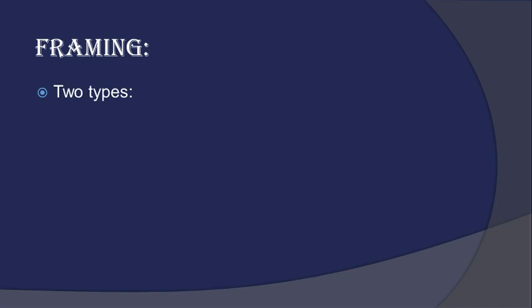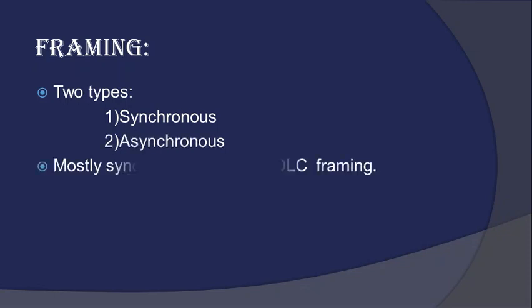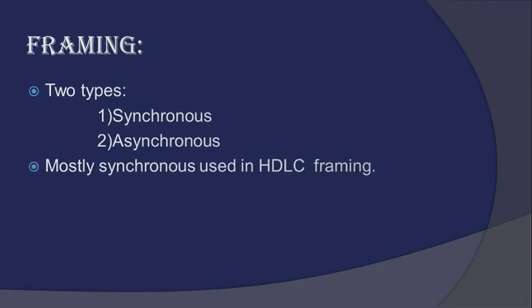Now let us see what framing is in HDLC. There are basically two types of framing: synchronous and asynchronous. Mostly synchronous type of framing is used in HDLC.